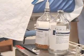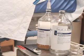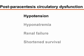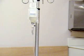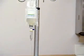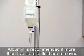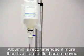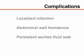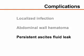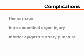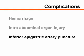Post-paracentesis circulatory dysfunction may occur after large-volume paracentesis and may lead to hypotension, hyponatremia, renal failure, and shortened survival. Although the use of albumin as a plasma expander is controversial, its use is recommended if more than 5 liters of fluid have been removed. Other complications of paracentesis include localized infection, abdominal wall hematomas, and persistent ascites fluid leak. More serious complications are rare and include hemorrhage, intra-abdominal organ injury, and inferior epigastric artery puncture.